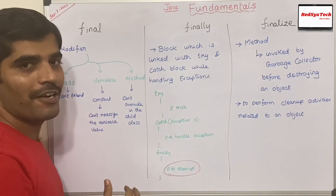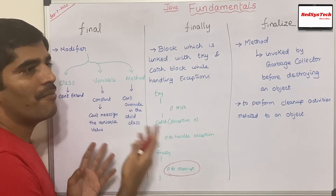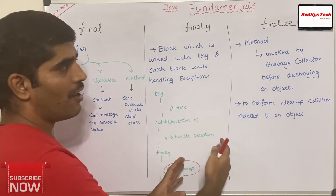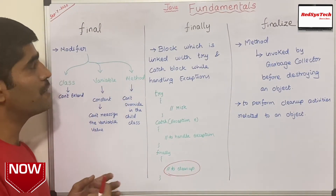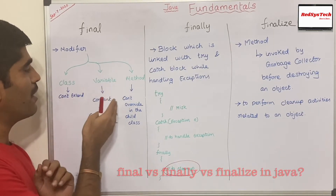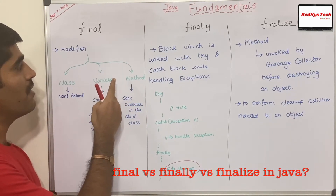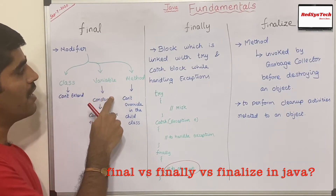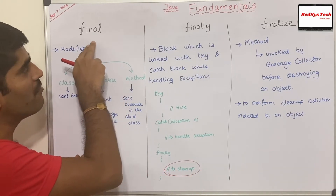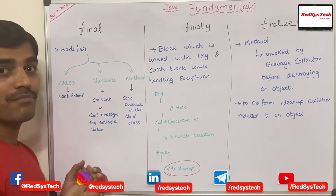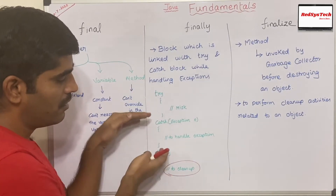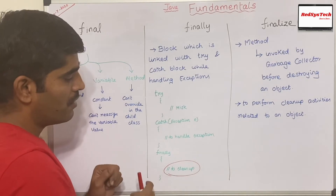These three keywords are not related to each other at all, but interviewers ask about them to check your understanding. Whenever anyone asks you the difference: final is a keyword and modifier which you can apply to a class, variable, or method. If applied to a class, you cannot extend it. If applied to a variable, you make it a constant and cannot reassign the value. If applied to a method, you cannot override it in a child class.